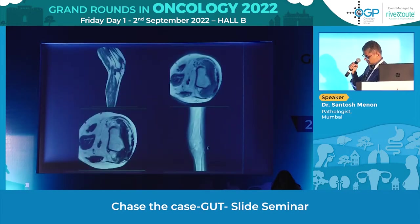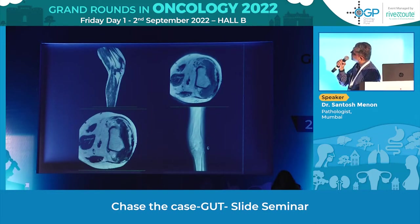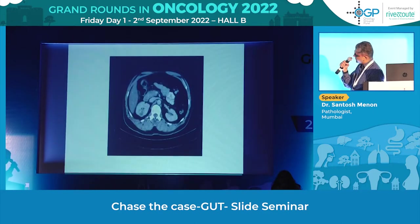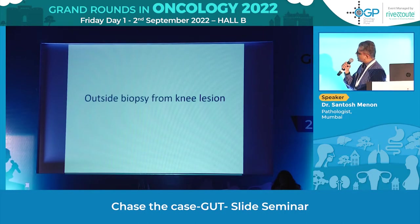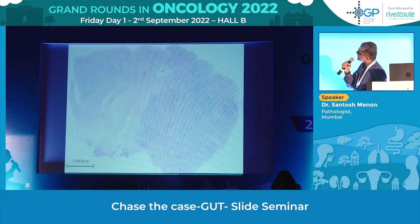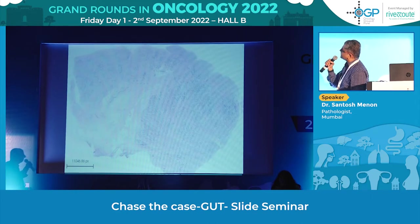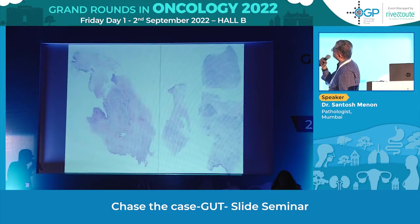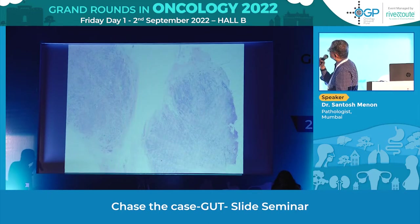These are the MRI pictures — I am not a radiologist but you can see there are some anomalies here. The kidney also had a small lesion visible on contrast-enhanced CT. An outside biopsy from the knee joint was sent, and at low-power scan you can see strands of tumour cells within a pink stroma.